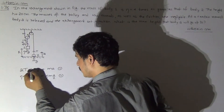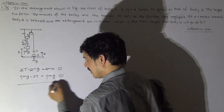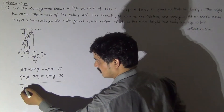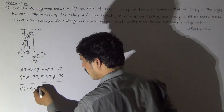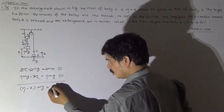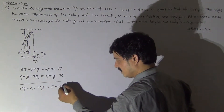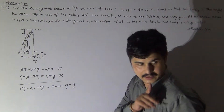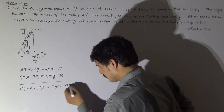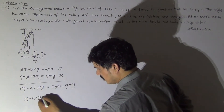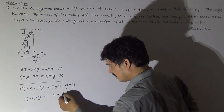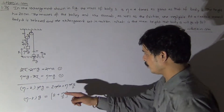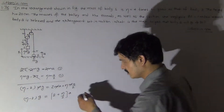The equation for the upward journey of block 1 is: T minus mg equals mA. And the equation for block 2 is: eta·mg minus 2T equals eta·m·(A/2). Multiplying the first equation by 2 and adding these two equations, the 2T terms cancel. So we get: (eta minus 2)mg equals 2mA plus eta·m·(A/2).